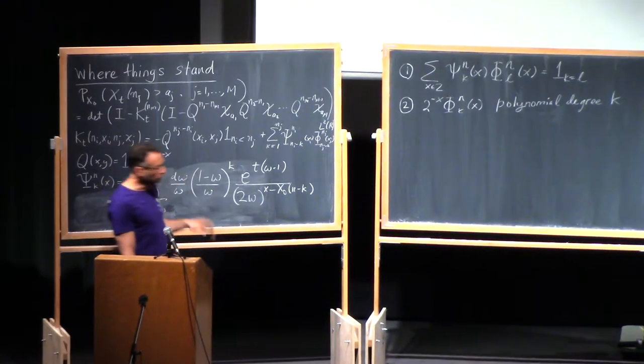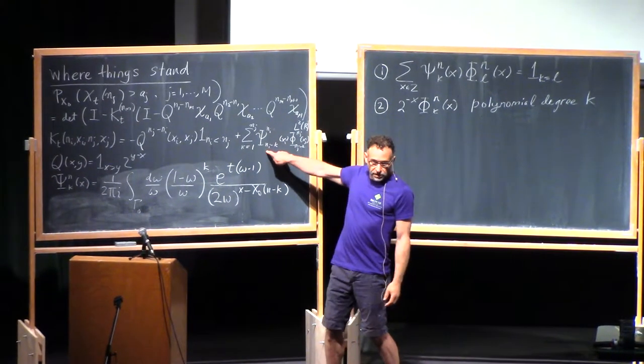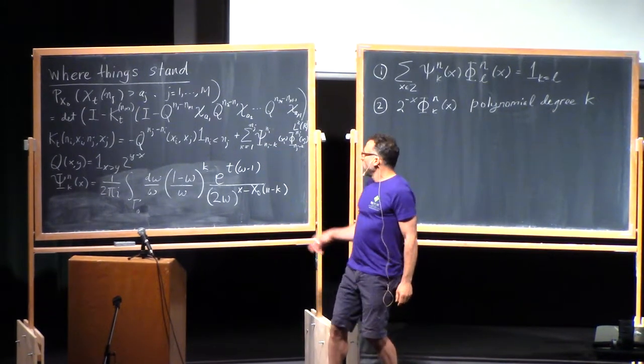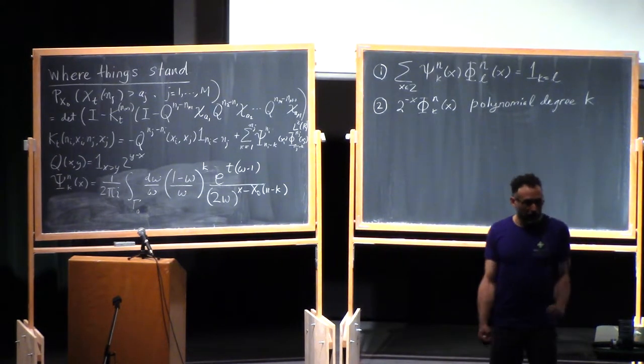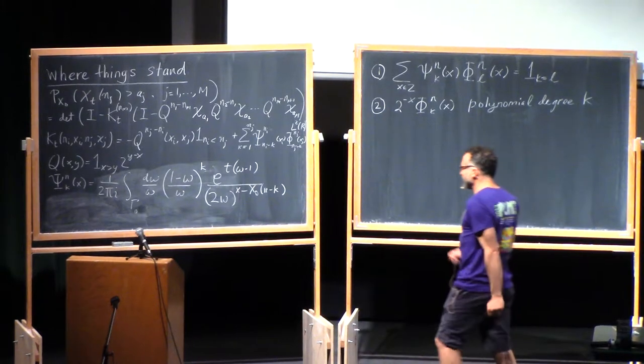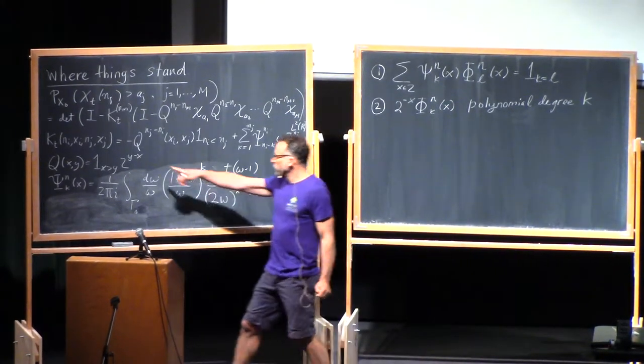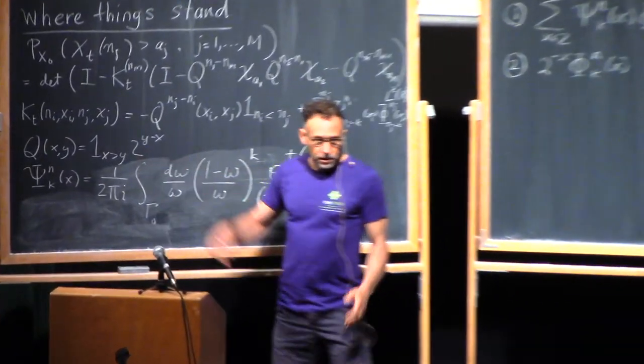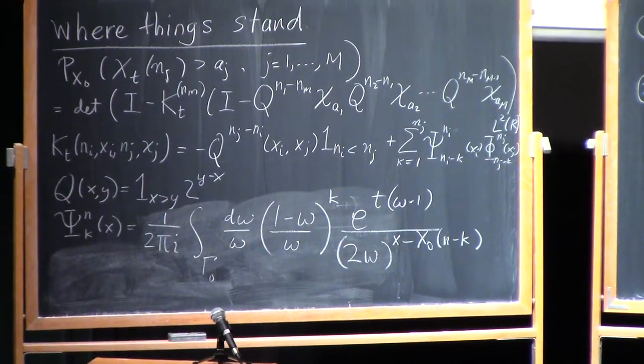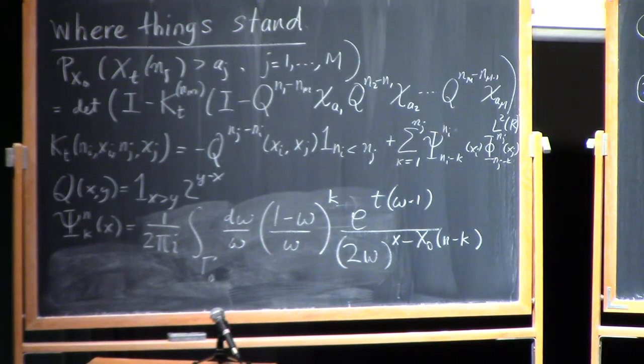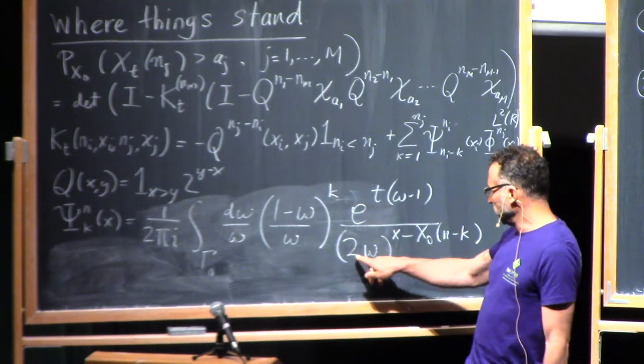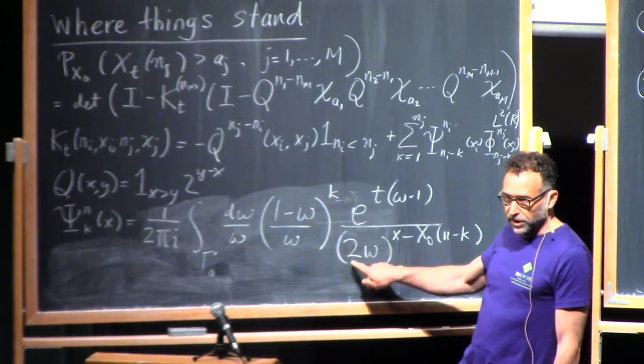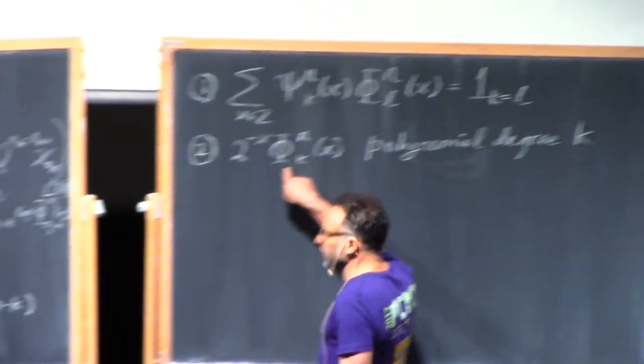And so there's this first term, which would drop out in that case. But the key thing is this part of the kernel. And then the psi's are given by some contour integrals, which I've been reminded are Charlier polynomials. And then this Q is just the jump probabilities of a geometric random walk jumping down with mean 2. And that conjugation, which gave you that, it changes a couple of other tiny things. There's now a 2 here. And then 2 to the minus x phi is a polynomial.